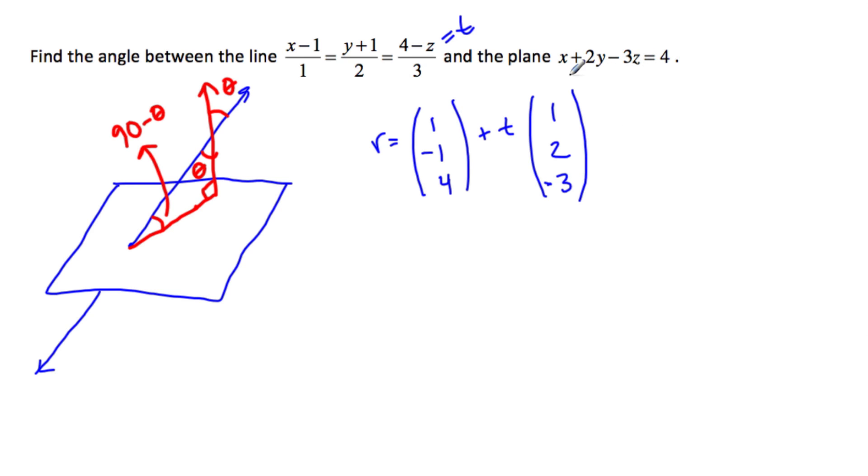Now this one, the normal vector is 1, 2, minus 3. So notice we have the same, this direction vector is 1, 2, minus 3. This normal vector is 1, 2, minus 3. So in actuality what has happened is...